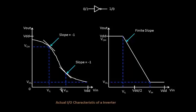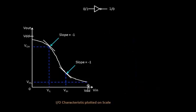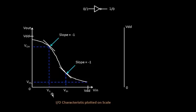With all these inferences in mind, we'll now plot all voltage levels — VIL, VIH, VOL, and VOH — on a single axis from 0V to VDD, and derive the noise margin equations from this. Since we're running out of time, we'll do this in the next video. Thank you.